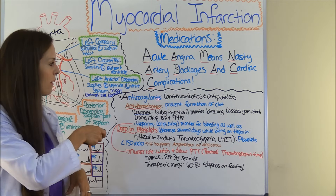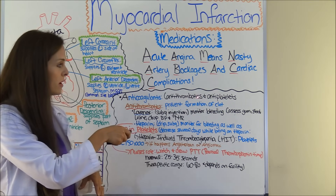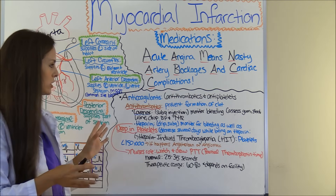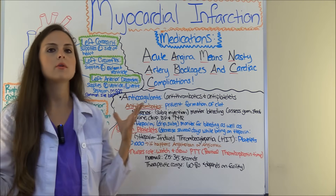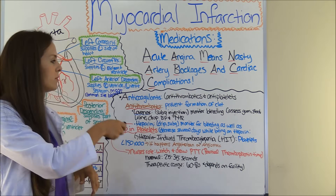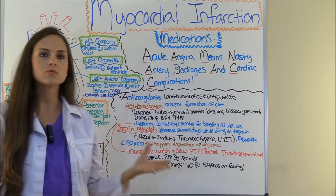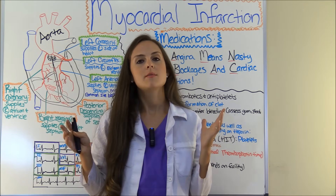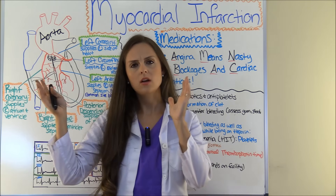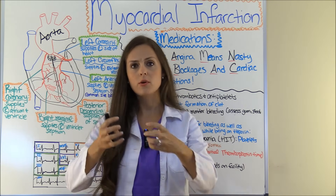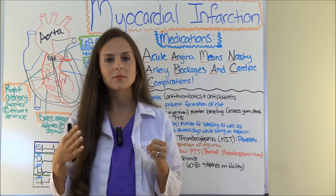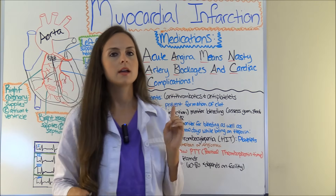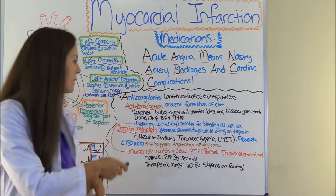The first drug category is anticoagulants, which includes antithrombotics and antiplatelets. Antithrombotics include Lovenox and heparin — these are some of the most popular ones used in the hospital setting. They prevent clot formation. Remember from part one, when a plaque ruptures, clotting factors form a thrombus that blocks blood supply even more to the heart muscle. These drugs prevent any further myocardial infarctions from happening.